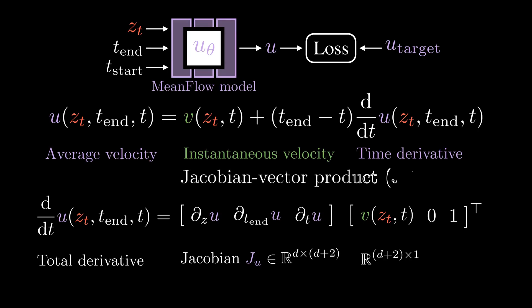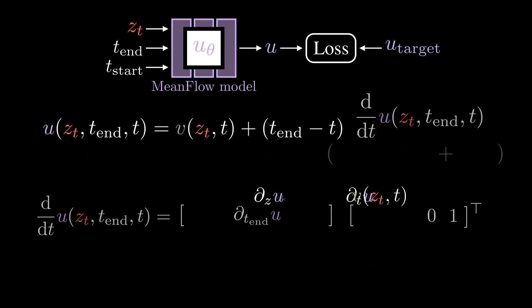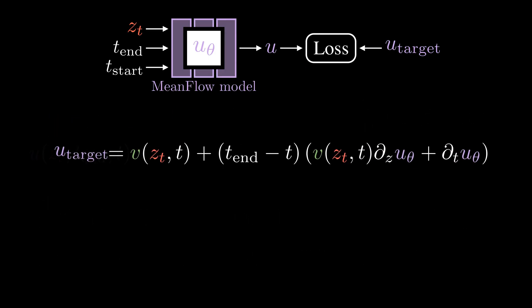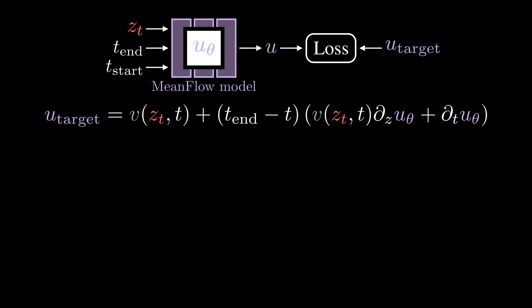But since we are only interested in the output change along a particular input direction, this can be efficiently computed using the method called Jacobian vector product. We can compute JVP without materializing the full Jacobian matrix. Let's plug the time derivative back. This forms the target vector for training our mean flow model.